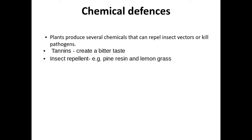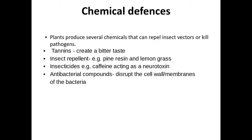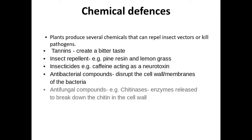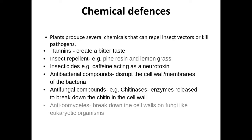Plants also have insect repellents such as pinene and lemongrass. There are insecticides such as caffeine, actins, and neurotoxins. There are antibacterial compounds — I have seen this on a mark scheme — found within a resin, which disrupt the cell wall and membranes of bacteria. There are antifungal compounds that break down the chitin in the cell wall of the fungus. And anti-oomycetes, which break down the cell walls of fungi-like organisms, though I've never seen that one on a mark scheme.